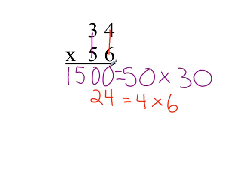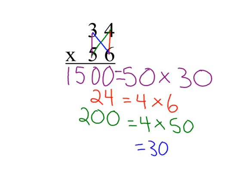And then we'll multiply 4 times 50, which is 200. And the last step of our bowtie would be 30 times 6, and that is 180.